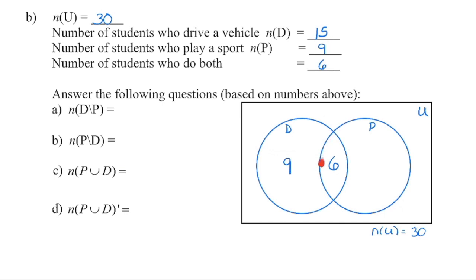The play-a-sport circle must contain nine students total. We already have six in the intersection, so there are three students who only play a sport but do not drive a vehicle. Adding up: nine plus six is 15, plus three is 18. With 30 students in the universal set, 30 minus 18 means there are 12 students in the complement who neither drive nor play a sport.